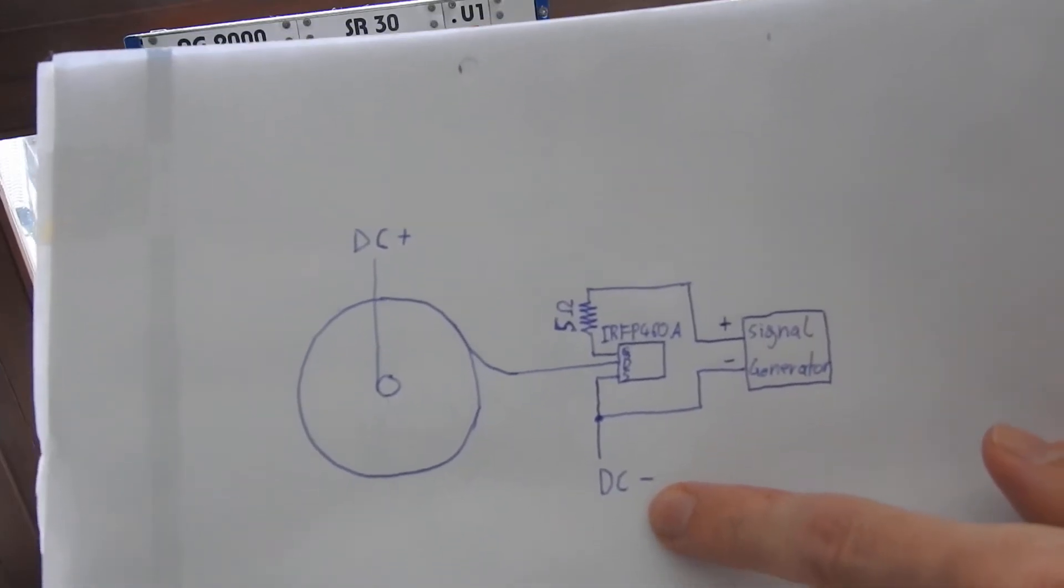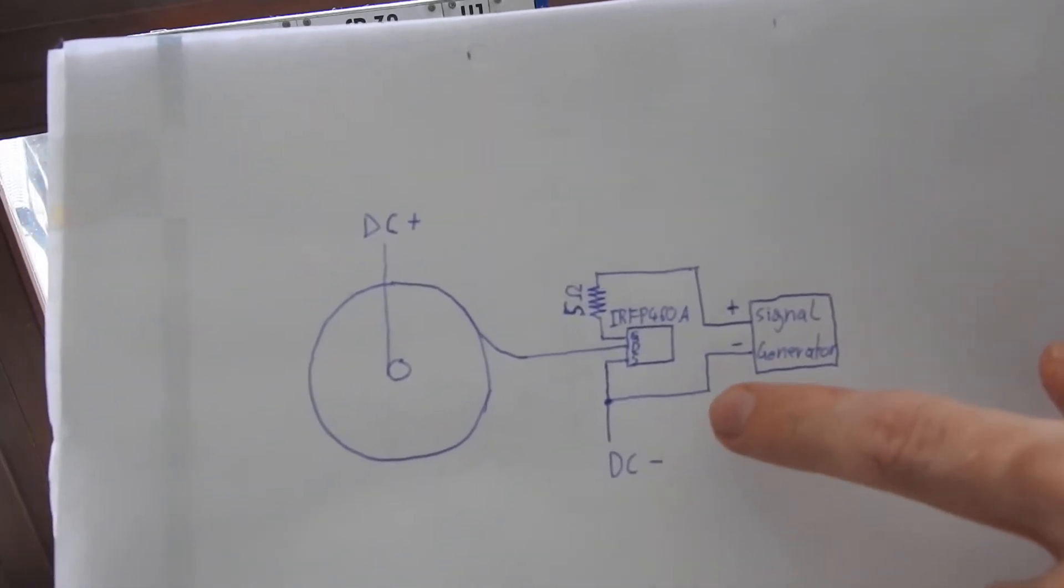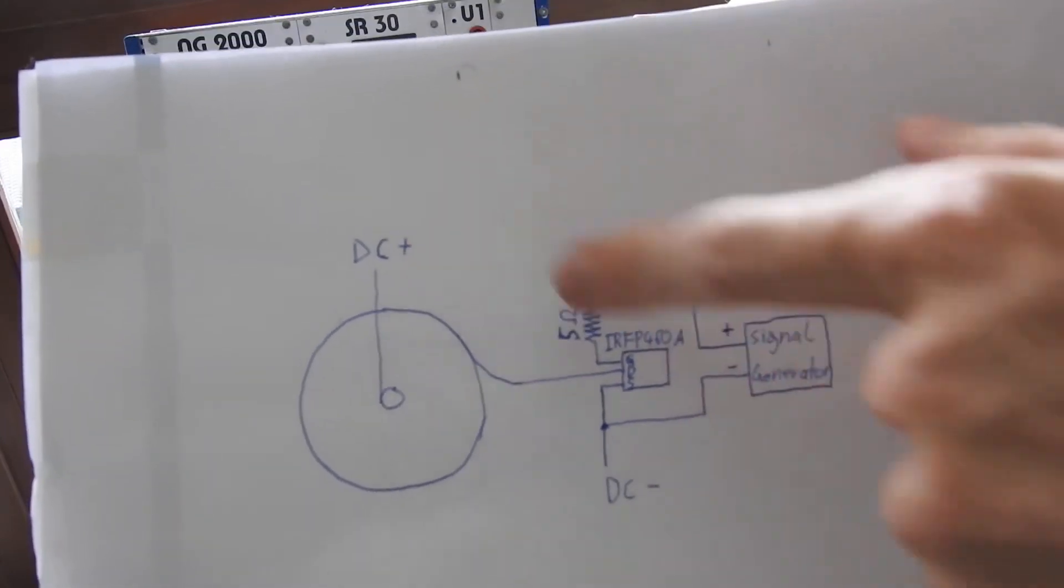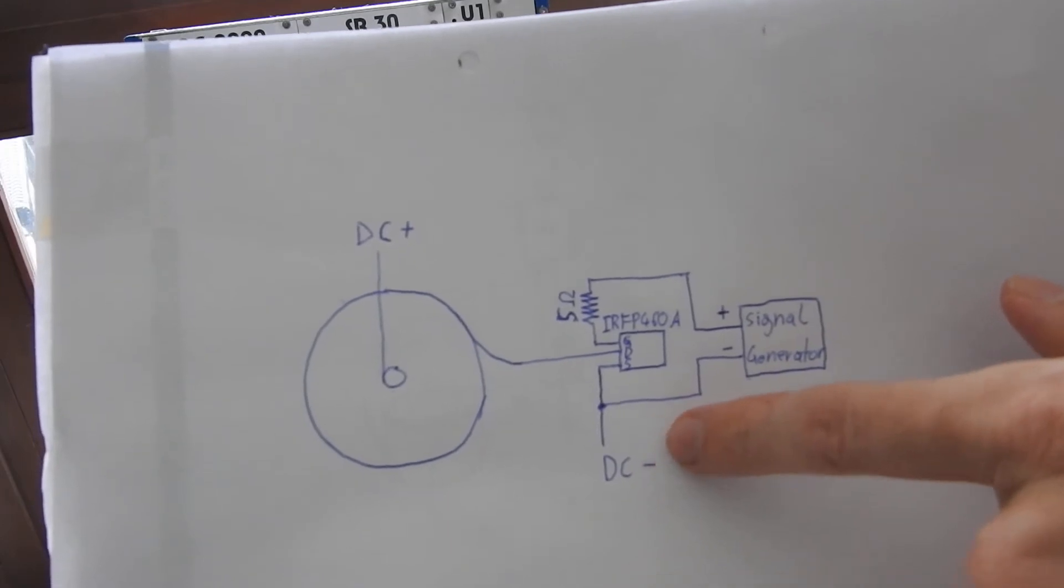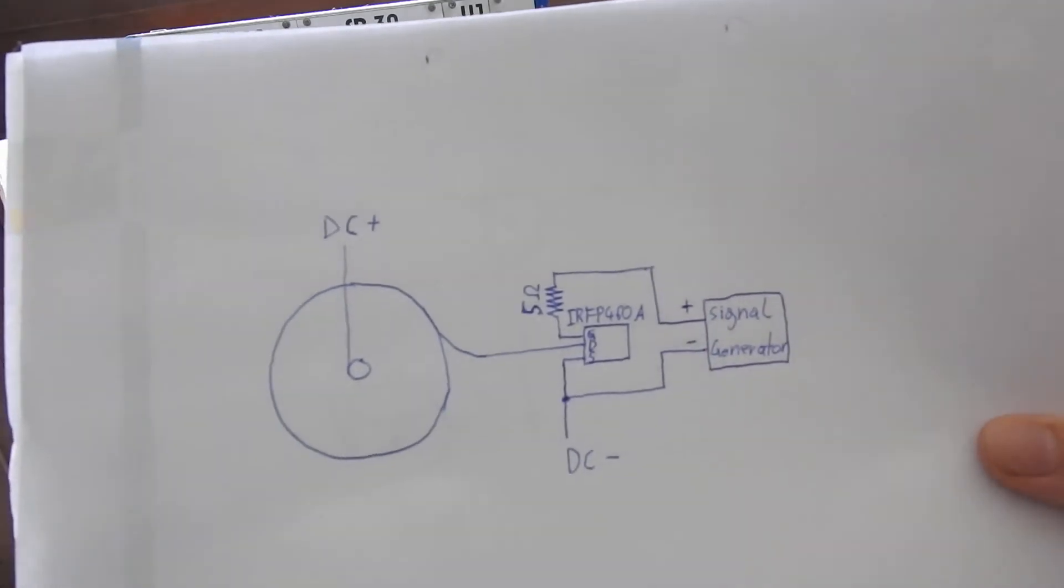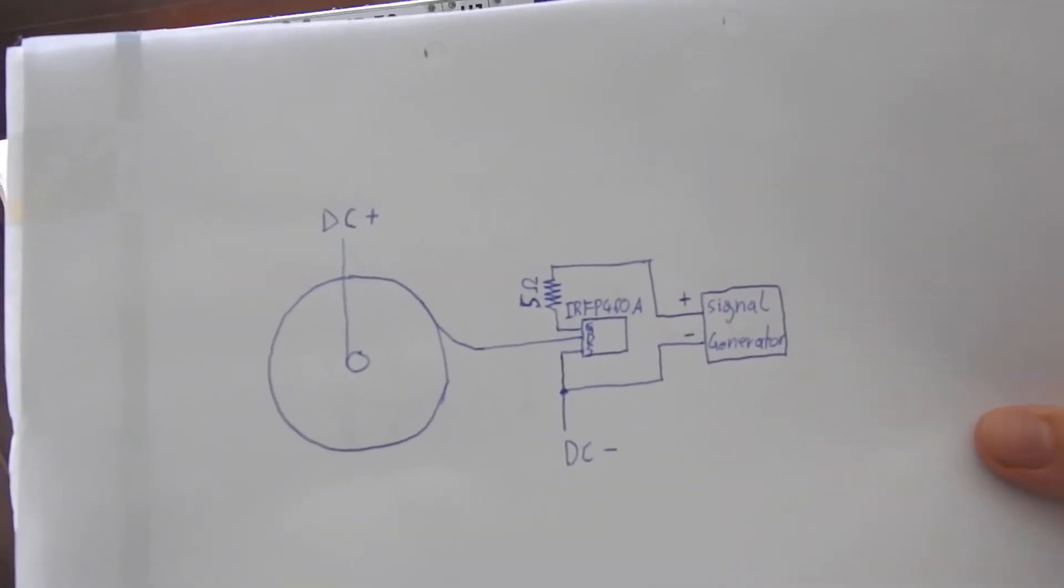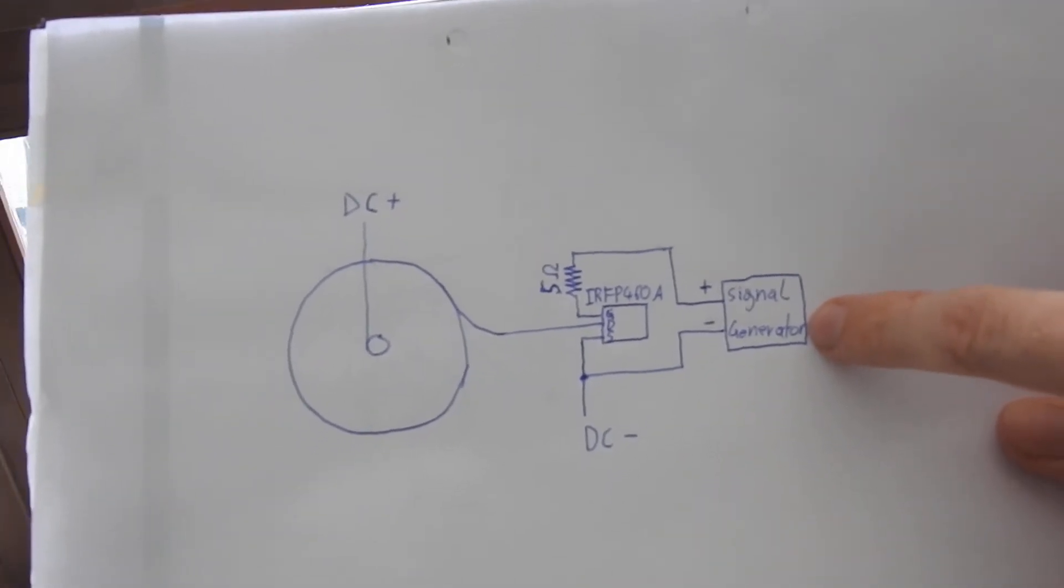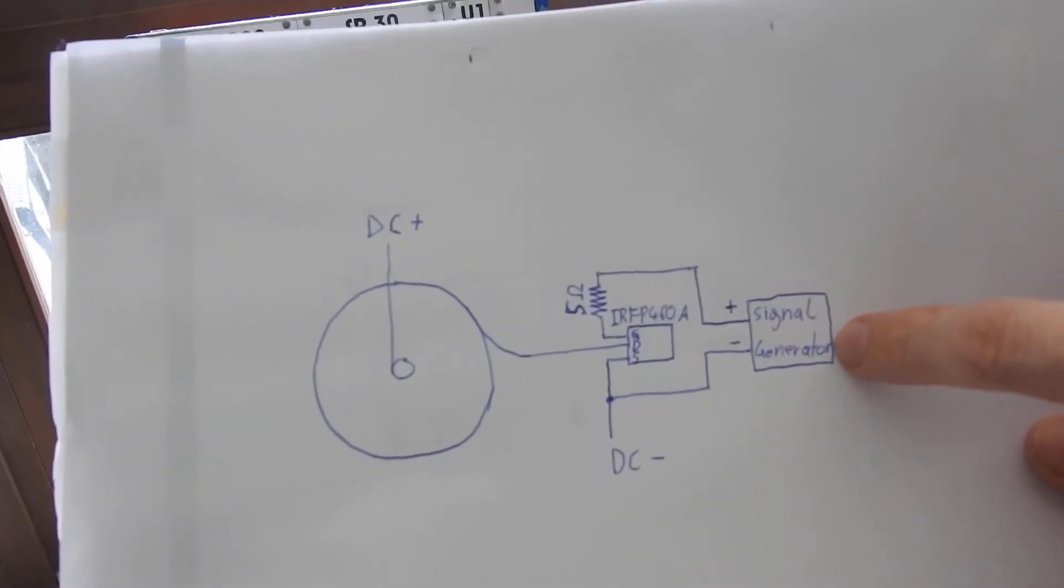What this setup basically does is the MOSFET or transistor is switching the DC voltage that is applied on and off like an electrical switch. The signal generator is basically the controller that tells the MOSFET when it has to switch.